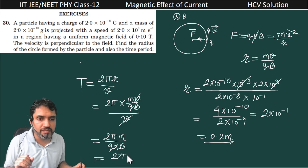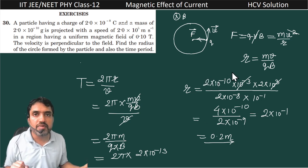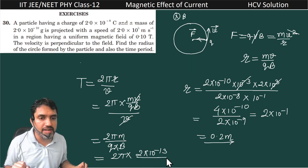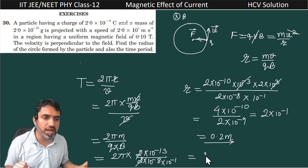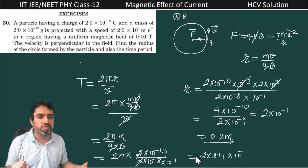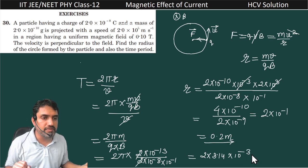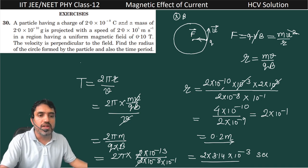The v cancels out and you get T = 2πm / (qB). So 2π as it is, and m = 2 × 10⁻¹³ kg — because 2 × 10⁻¹⁰ gram converted to kg — divided by q = 2 × 10⁻⁸ and magnetic field = 10⁻¹. The 2's cancel out and finally you get 2 × 3.14 × 10⁻³ seconds. So you just multiply 2 × 10⁻³ × 3.14 to get the final time period.